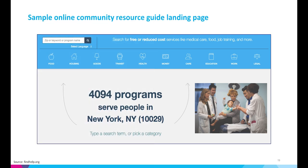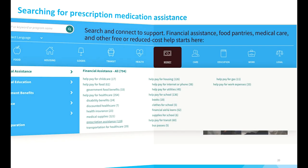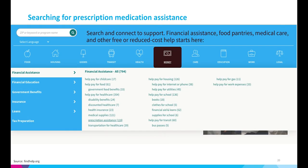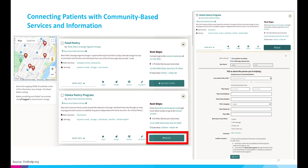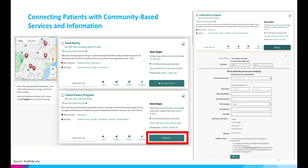This is an example of a community resource guide landing page. Here you can see an example of the categories of services and resources provided. This shows a sample of how referrals can be made directly to a community-based organization, and on the right, how information can be shared directly with patients through email, text, and other mechanisms.